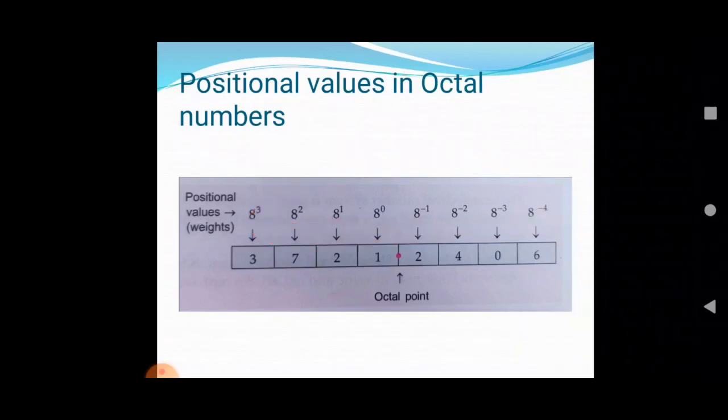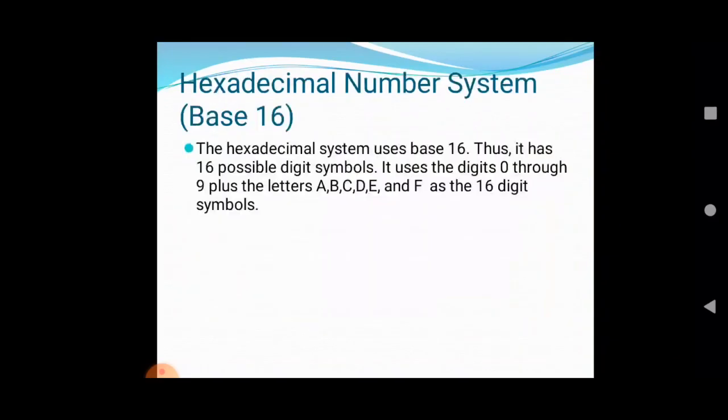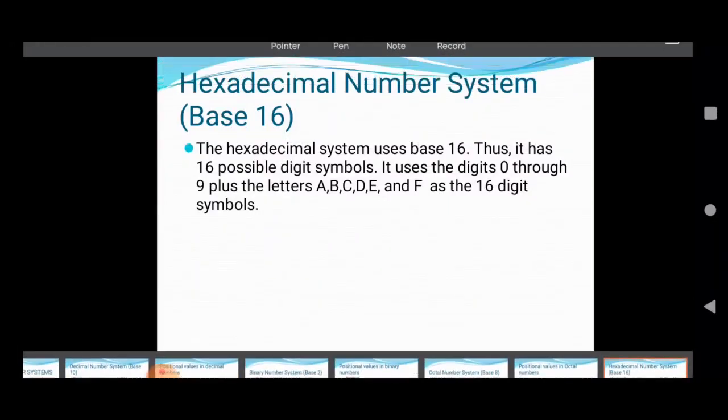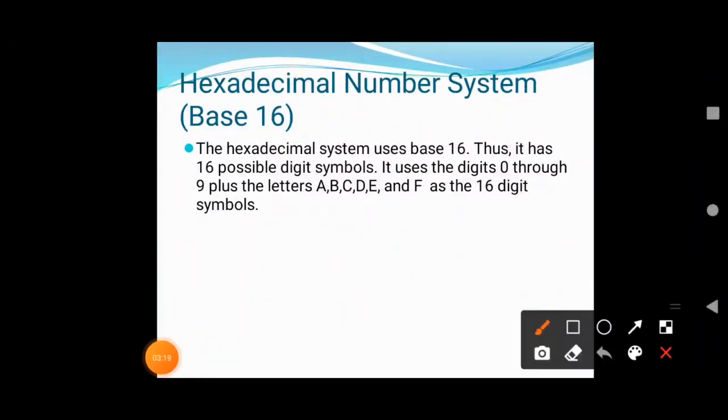Next, now hexadecimal number system, base 16. The hexadecimal system uses base 16. It has 16 possible digit symbols. It uses the digits 0 through 9 plus the letters A, B, C, D, E, F. 0 to 9 and A to F, as the 16 digit symbols.